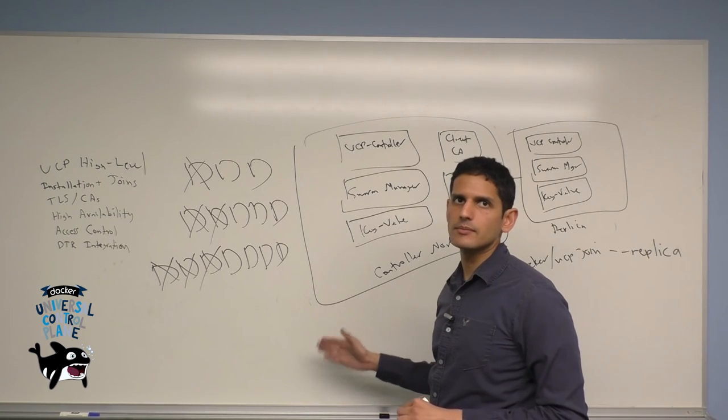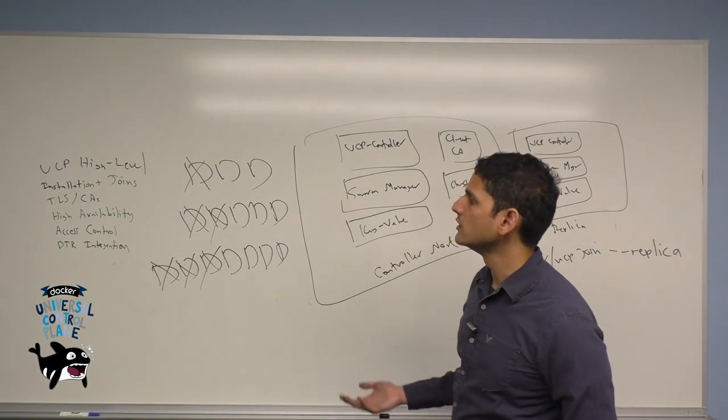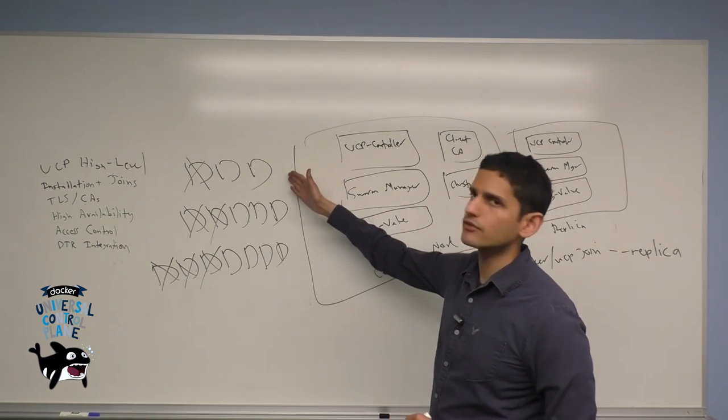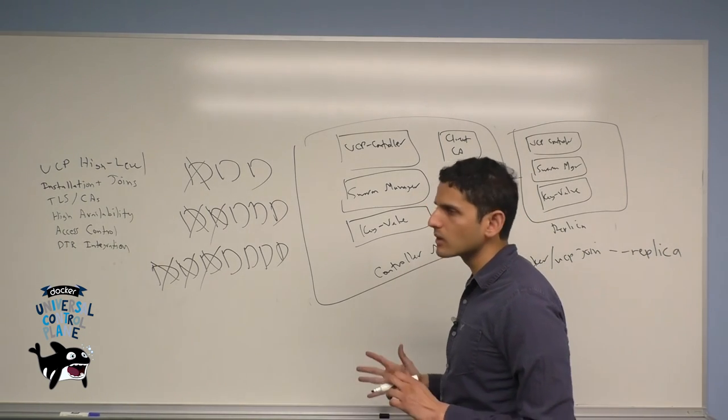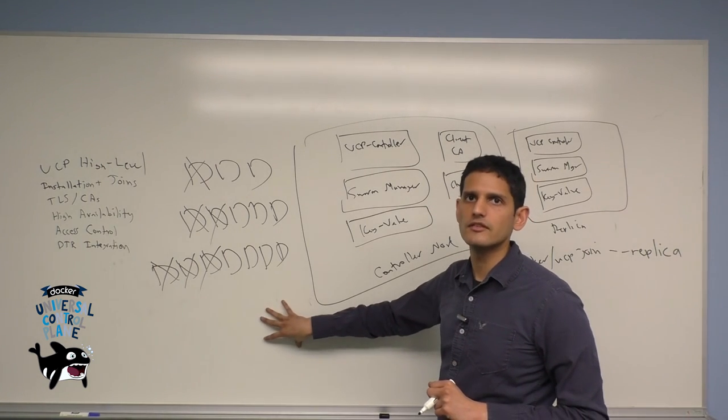Thus, the more nodes you have as replicas, the lower potential performance you'll have on your system. So if you want a higher performance system, but you're only willing to tolerate one failure, then you use three nodes. If you want a super resilient cluster and you want to tolerate three failures, but you're willing to deal with slightly lower performance as a result, you're going to want to use seven nodes.